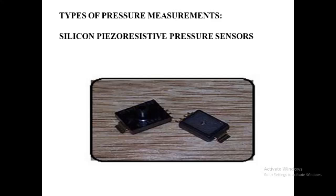The third type is the differential pressure sensor, which measures the difference between two or more pressures introduced as inputs to the sensing unit. For example, measuring the pressure drop across an oil filter. Differential pressure is also used to measure flow or level in pressurized systems. The last type is the sealed pressure sensor, which is similar to the gauge pressure sensor but is pre-calibrated by the manufacturer to measure pressure relative to a fixed reference pressure level.